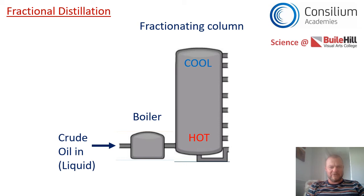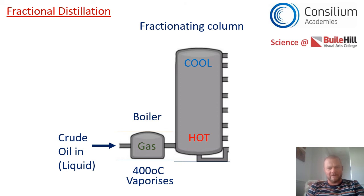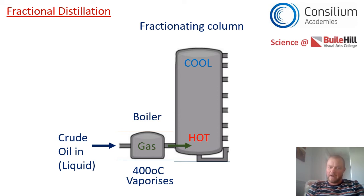The first thing to understand is that crude oil is a liquid and it enters the boiler — a bit like the boiler at home where water is heated up. In this case, crude oil enters and is heated to around 400 degrees. 400 degrees is hot enough for the whole crude oil to vaporize — the whole thing turns to a gas. Now, hot gases rise, so the gas makes its way into the fractionating column and rises up that column.